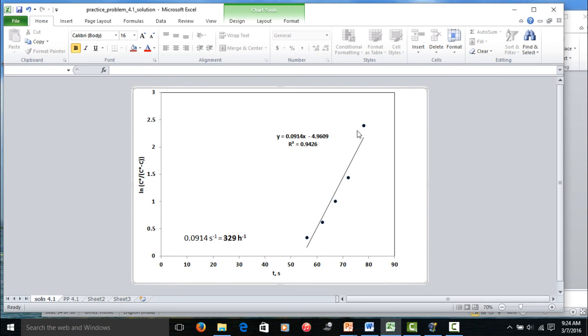Of course, this is experimental data. So, you do not expect it to always fall on an exact strict line. This is good enough. The R squared value is about 0.94. That is probably the best that is obtainable from this particular data.